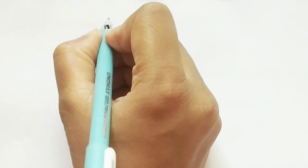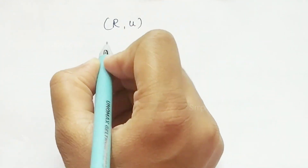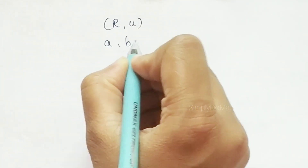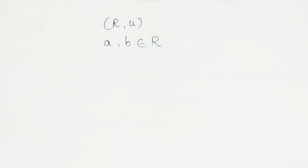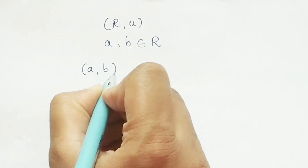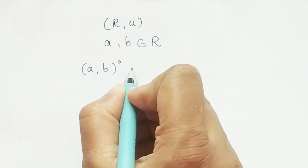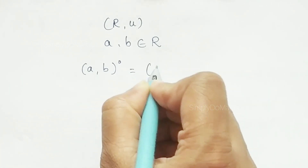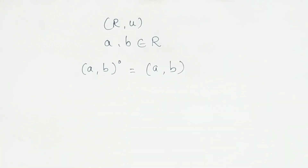Hello everyone, let's study some important properties of the interior of a set in a topological space. Let us consider the real space R. For any two elements A and B that belong to the real numbers, in the real space R the interior of the open interval (A, B) is nothing but the open interval from A to B.